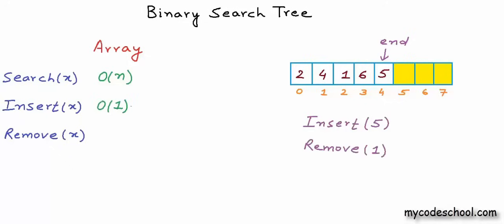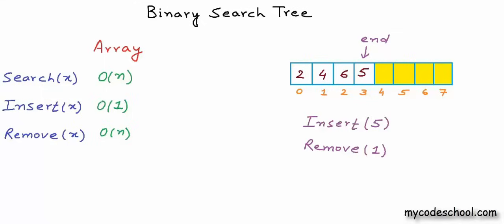What about removal? If we want to remove 1 from the collection, we will have to shift all records to the right of 1 by one position to the left, then decrement end. The cost of removal in worst case is O(n). For insertion, if the array gets filled, we create a new array twice the size and copy the contents — that copy costs O(n). So insertion is O(1) if the array is not full, and O(n) if it is. For now, let's assume the array will always be large enough.